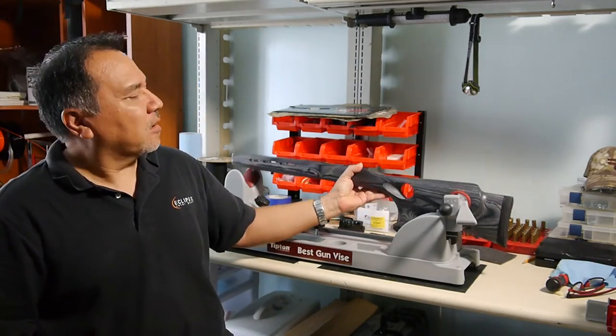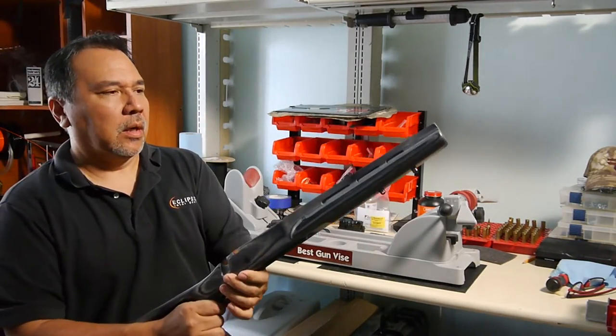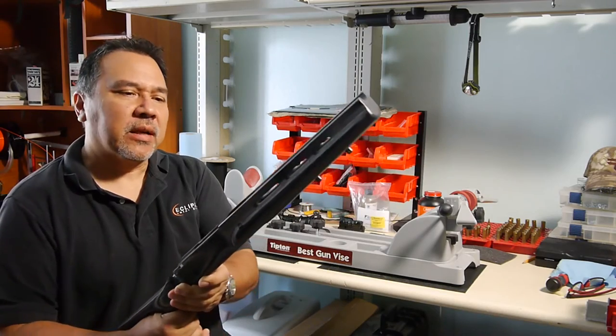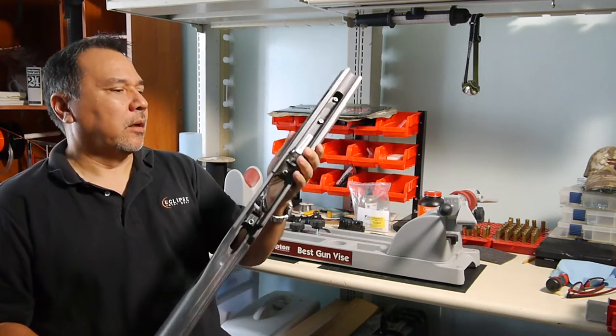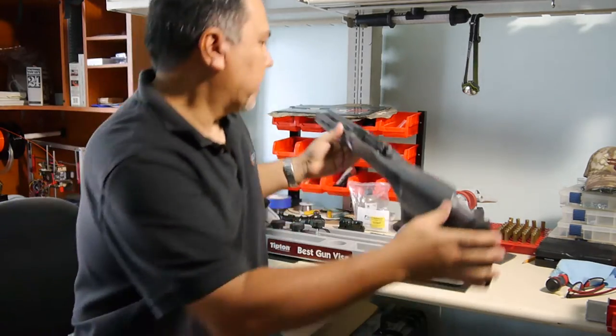So this is a Boyd stock varmint thumb hole that I've been fitting for my Savage Axis heavy barrel. I've been doing a few modifications here and there, but in particular I wanted to show you what I've done.